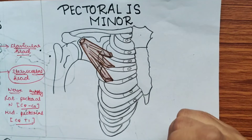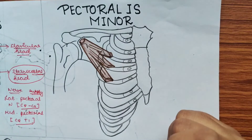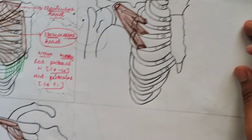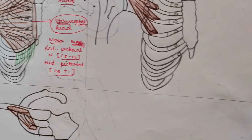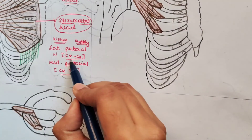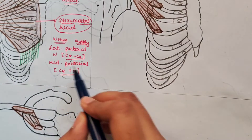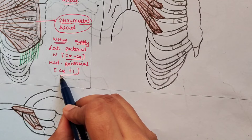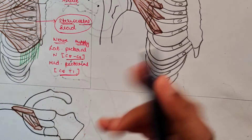Nerve supply — this muscle is also supplied by the medial and lateral pectoral nerves. As you can see, the root value of the lateral pectoral nerve is C5 to C7, and the medial pectoral nerve is C8 and T1.